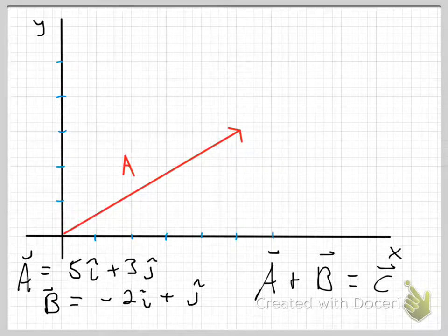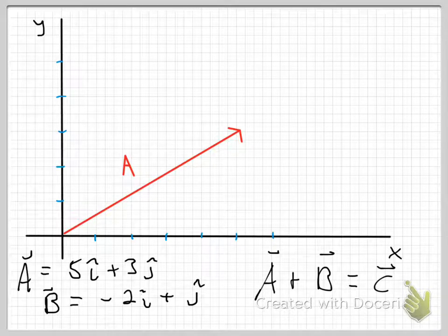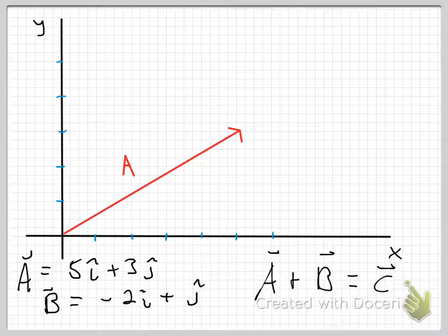So the vector B here is minus 2i hat plus j hat. Very often if you're in class with me, I'm not going to say the hats of the i hat or j hat. I'm just going to say 2i plus j. But I'll try to say the hats here to remind you that these are unit vectors, because I realize this is new at this point. So what this means is I'm going to move negative 2 units in the x direction and then 1 positive unit in the y direction.